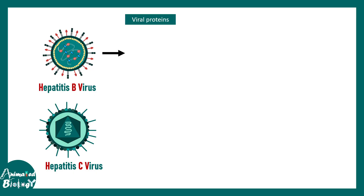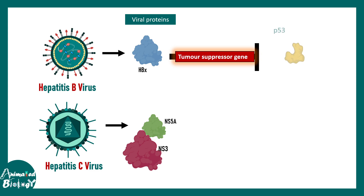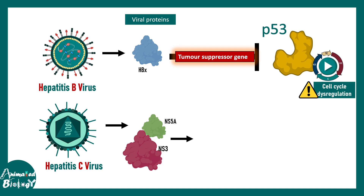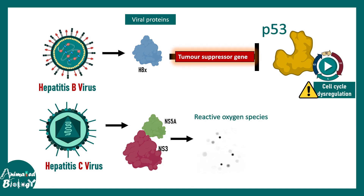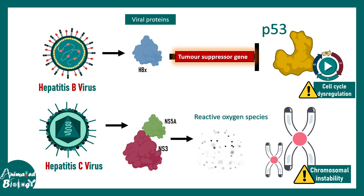Several viral proteins found in hepatitis B virus, such as HBX, and in hepatitis C virus, such as NS5A and NS3, can actually inhibit tumor suppressor genes such as P53. Additionally, hepatitis C virus can lead to severe reactive oxygen species (ROS) production, which ultimately leads to chromosomal instability associated with cancer.